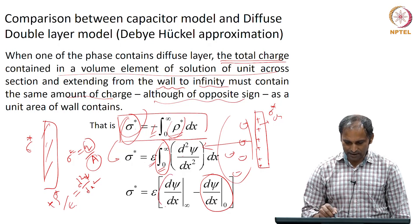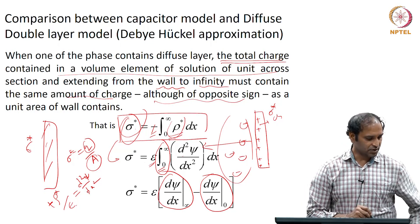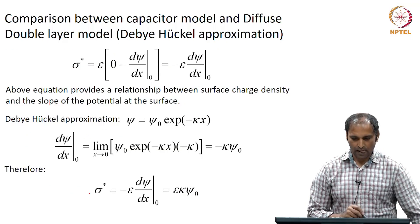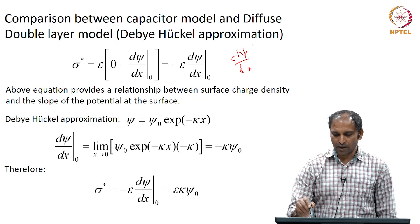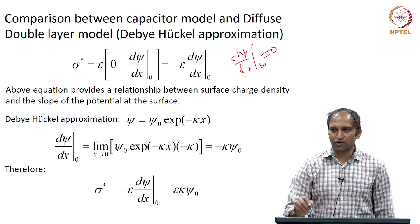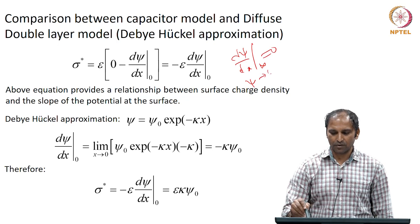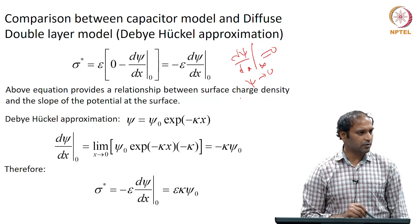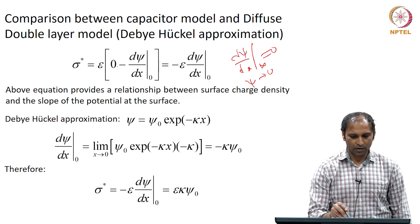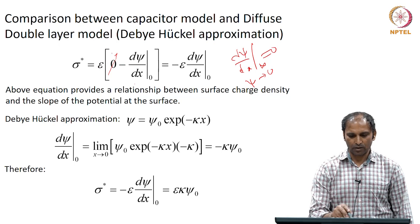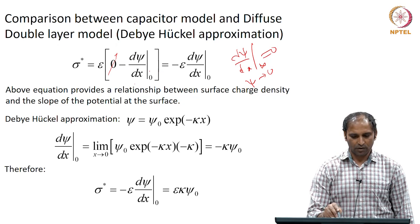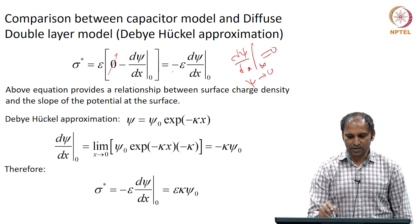Therefore, integrating, σ* equals ε times [dψ/dx at infinity minus dψ/dx at 0]. Here zero is at the surface of the charged body, and infinity is at a very far distance from the charge surface. We know that dψ/dx at infinity is going to be zero because ψ itself is zero at x equals infinity. Therefore, the first term is zero, leaving σ* equals minus ε times dψ/dx at zero.